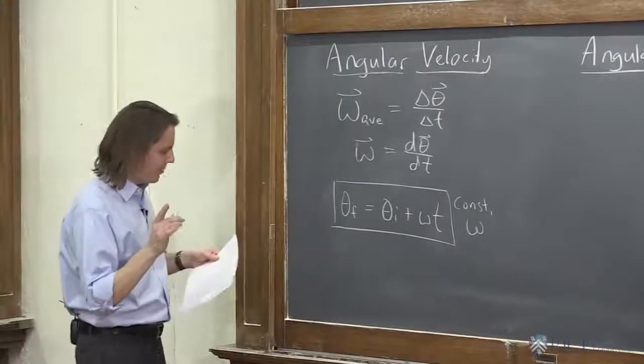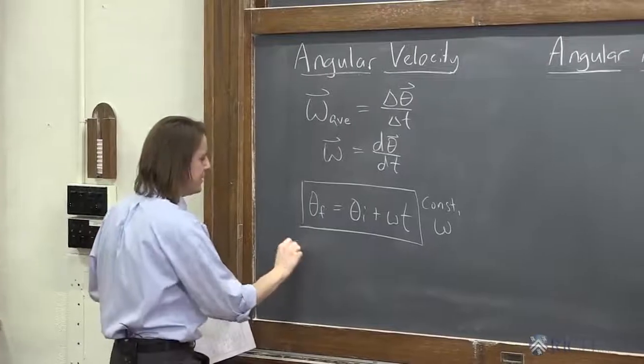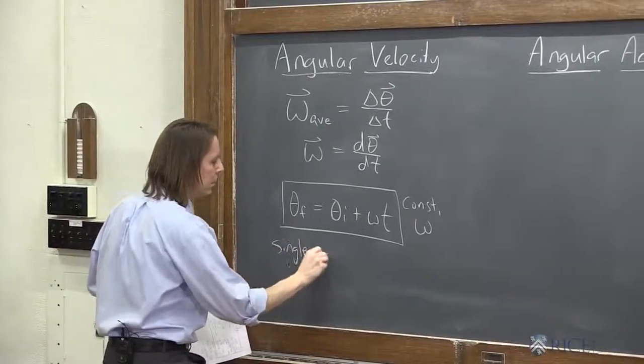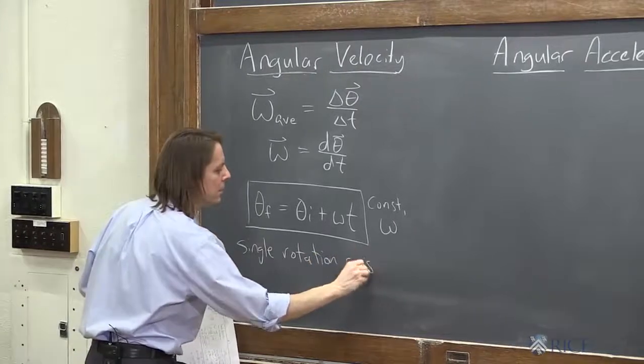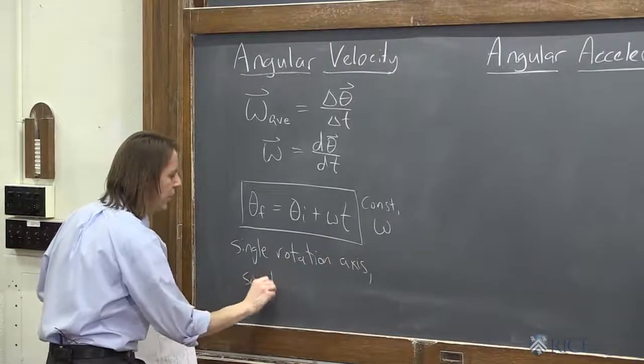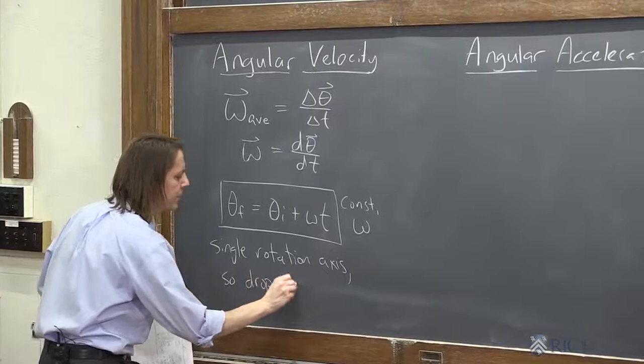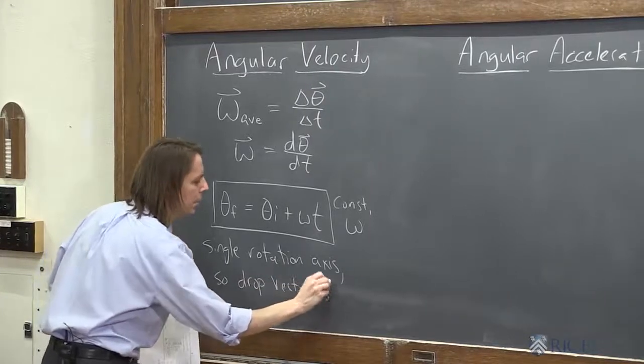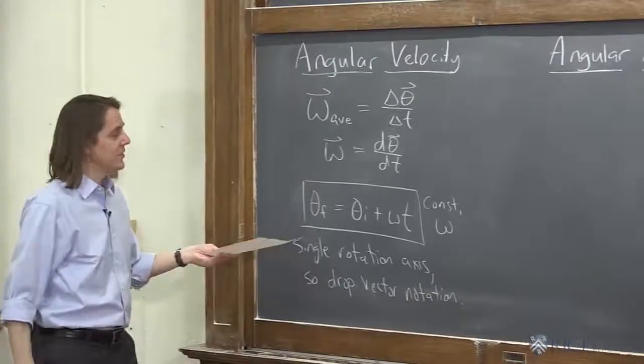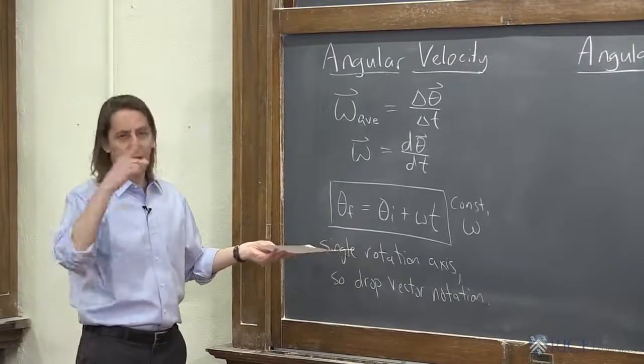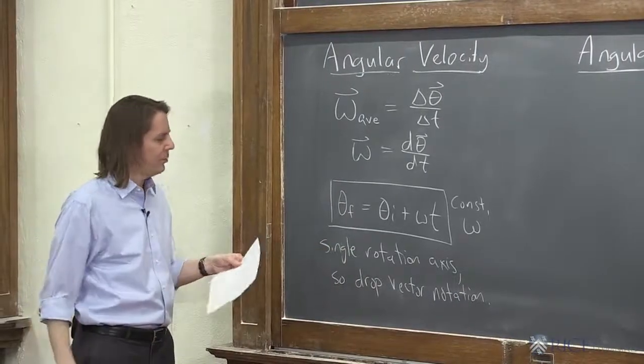And one thing I've done mathematically here is this is a single rotation axis. So drop the vector notation. We did that in translational as well. It's the same as saying this is just 1D motion. We're only going around one axis, so we don't need all the vectors.